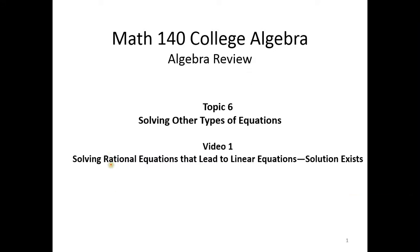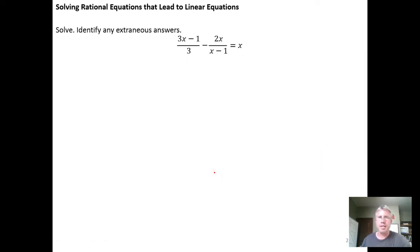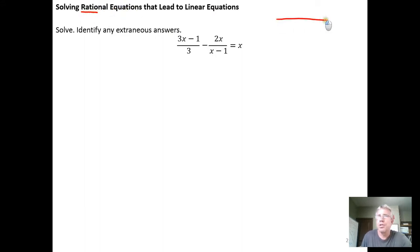In this video we're going to look at solving rational equations when we have a rational equation that winds up reducing to solving a linear equation, and we're going to look at the specific case where a solution does exist. We'll do a follow-up video where we look at an example where the solution doesn't exist. Rational equations are just equations that have ratios of polynomials in them — polynomials over polynomials.